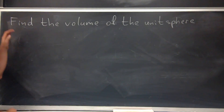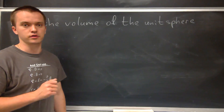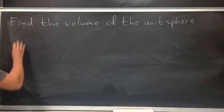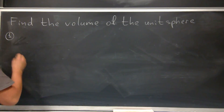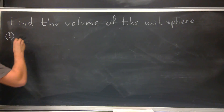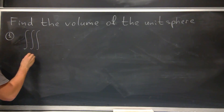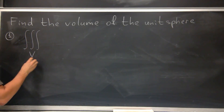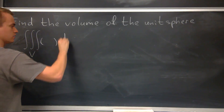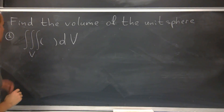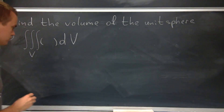Hello guys, in this video I want to find the volume of the unit sphere and I'm going to use cylindrical coordinates. For the first step, if you want to find the volume of this unit sphere, we need to use a triple integral. We need to find the triple integral over V, where V is our desired volume, and here we need to put some function dV.